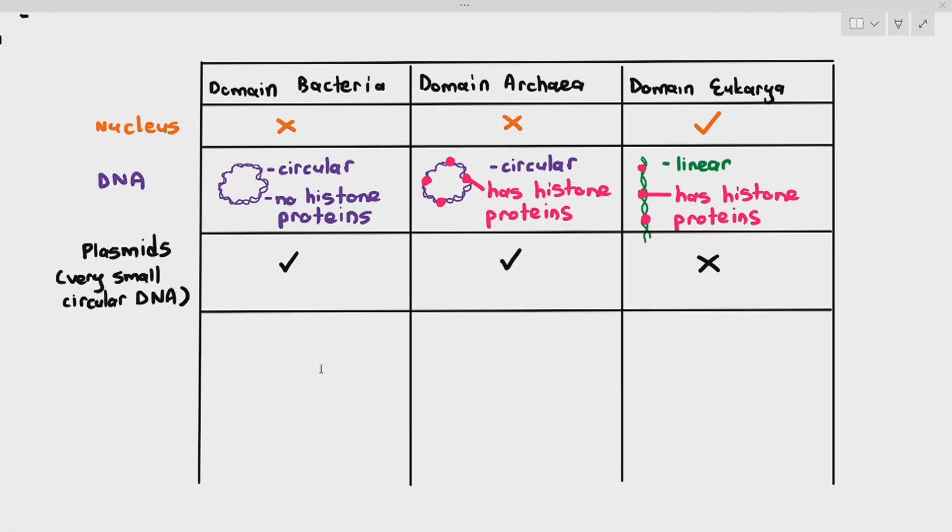But eukarya, any organisms under the domain eukarya, do not have plasmids.